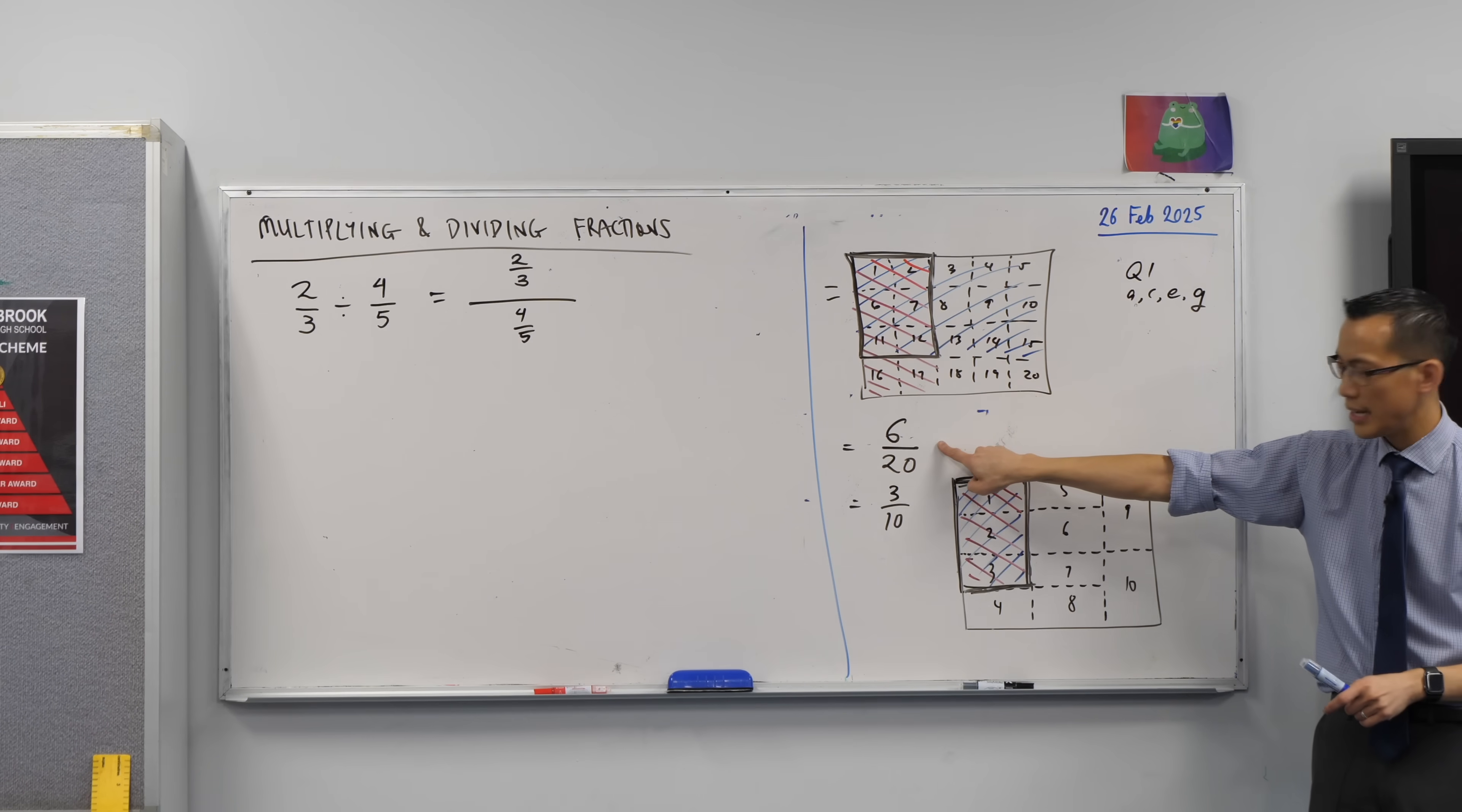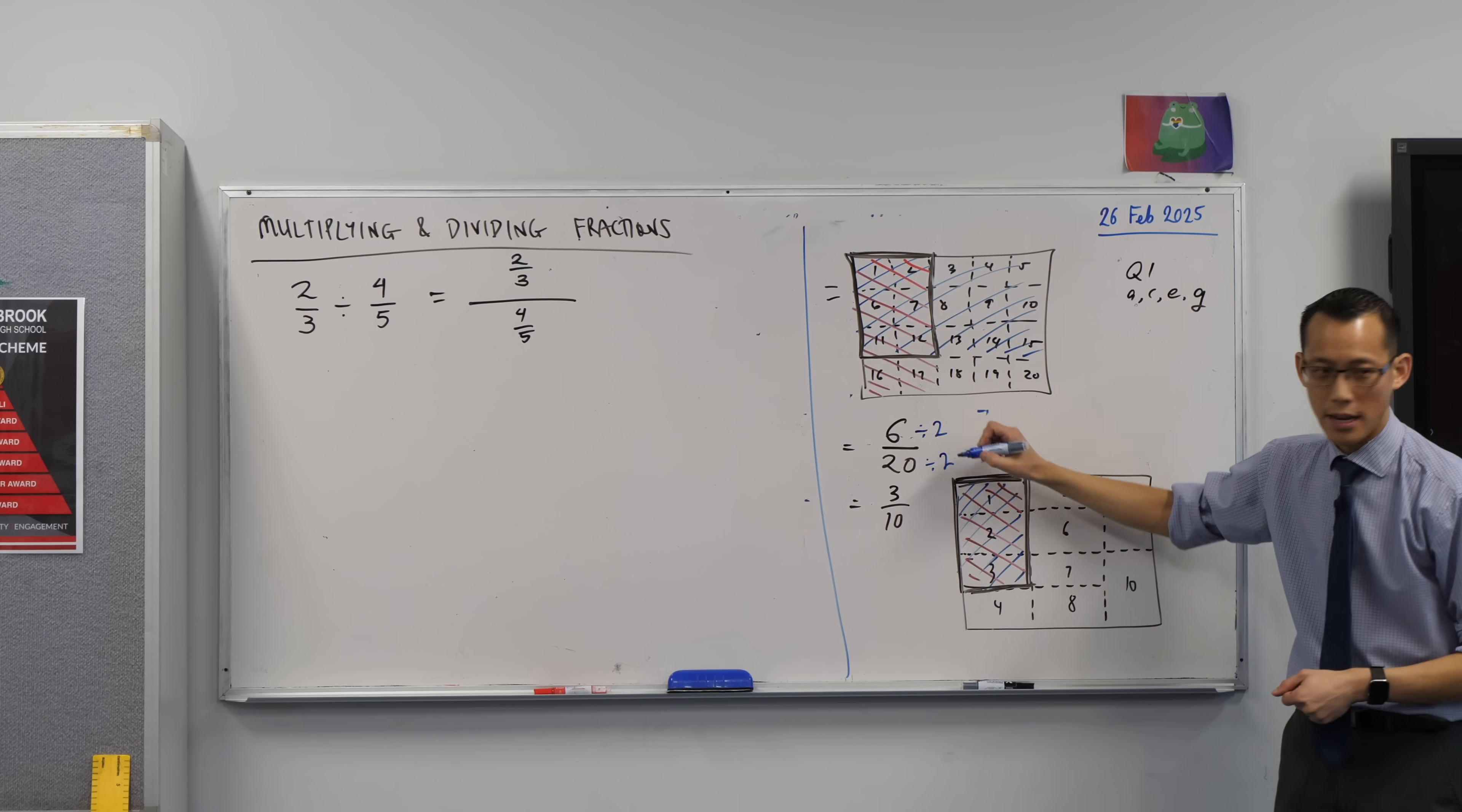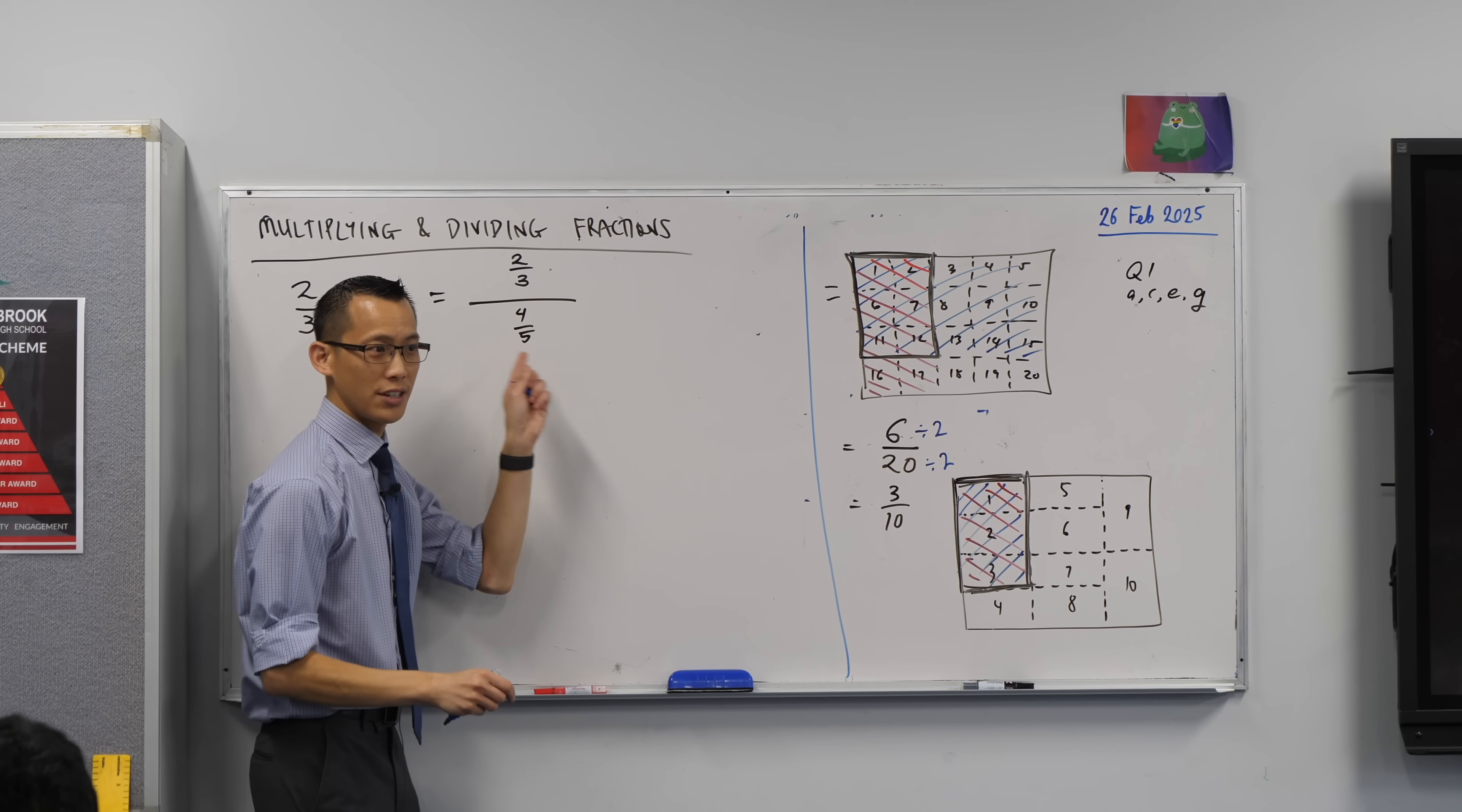You know when you looked at this answer here, right? Do you remember this? And you said 6 out of 20, that's the same as 3 divided by 10. Do you remember that? What you did was you divided the numerator by 2 and you divided the denominator by 2. Does that make sense? Like you can't just go dividing things. You have to do it equally. So far, so good?